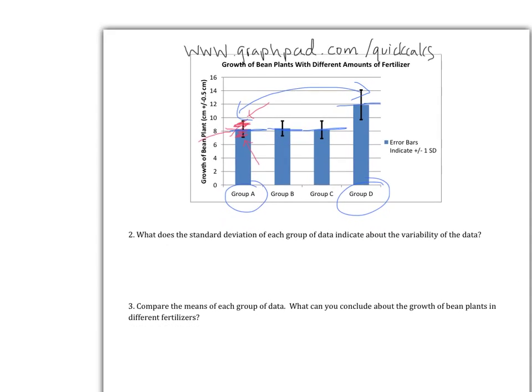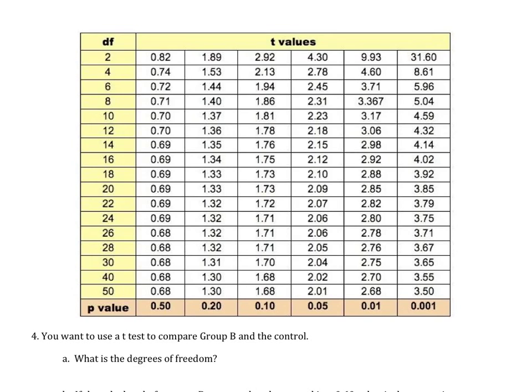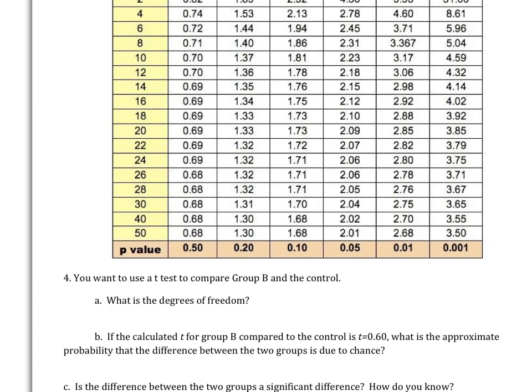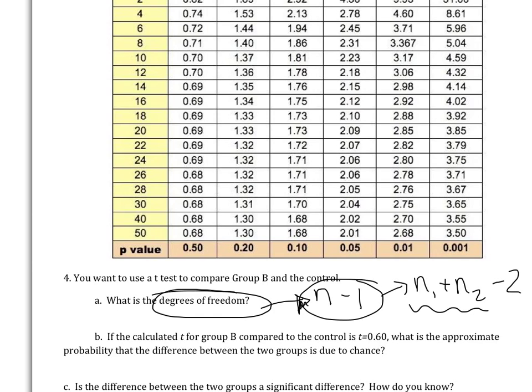In order to do that, there's a couple more vocab words that we need. The vocab words that we first need is something called degrees of freedom. To me, it sounds like kind of an exciting term, but the way that you find degrees of freedom is not that exciting. It's just going to be the number of data points, n, in a data set, minus 1. It's going to be that way for each data set. So you're going to have n1 plus n2 minus 2. That is your degrees of freedom. If I wanted to find degrees of freedom comparing group B and the control, they both had a sample size of 10, and so I'd have 10 plus 10 minus 2. That would, of course, give me 18. That would be my degrees of freedom.